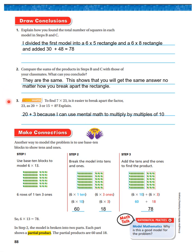To find 7 times 23, is it easier to break apart the factor 23 as 20 plus 3 or 15 plus 8 and explain? Well, it's easier to do 20 plus 3 because I can use mental math to multiply by multiples of 10.